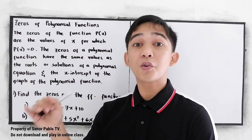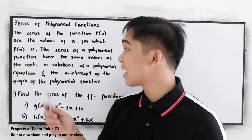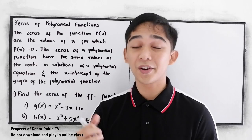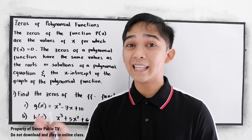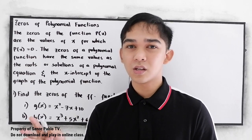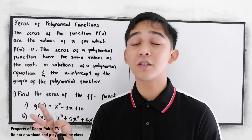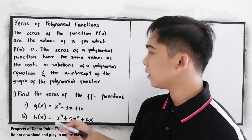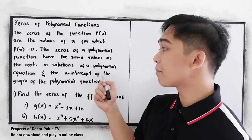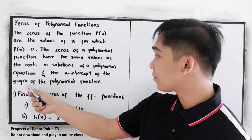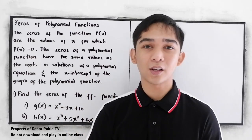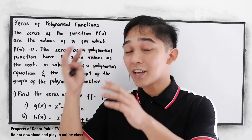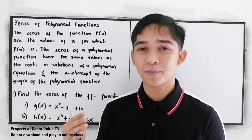So in your grade 9 lesson, we discussed getting the roots or solutions of the quadratic equation. We will be needing the methods from your grade 9 lesson to find the zeros of the polynomial function and the x-intercept of the graph of the polynomial function. So your lesson in grade 9 is related to this topic.